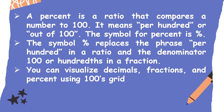A percent is a ratio that compares a number to 100. It means per hundredth or out of 100. The symbol for percent replaces 'per hundredth' in a ratio and the denominator 'hundredths' in a fraction. You can visualize decimals, fractions, and percent using a one-hundredths grid.